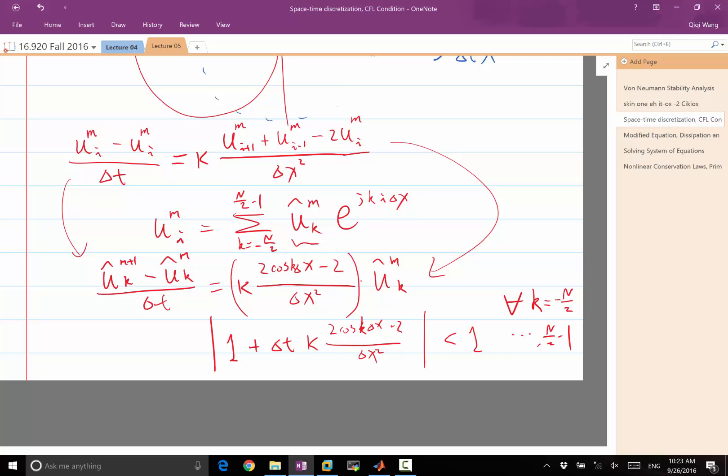If you have an initial condition, it's usually not just containing a single Fourier mode. Almost any other function contains all the Fourier modes, it's just the magnitude. It's basically a linear composition of many Fourier modes, and as soon as one of your k is not stable, that component is going to be exponentially magnified.